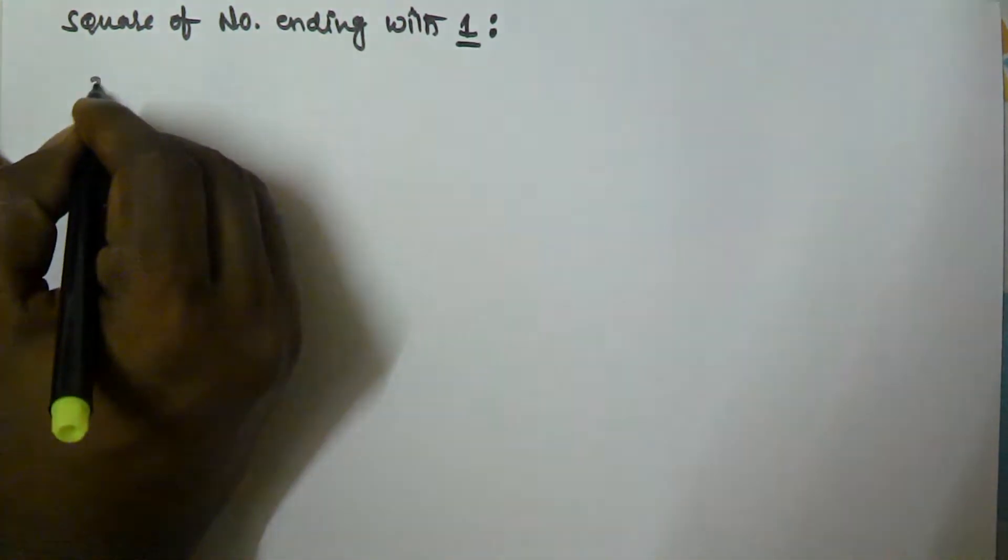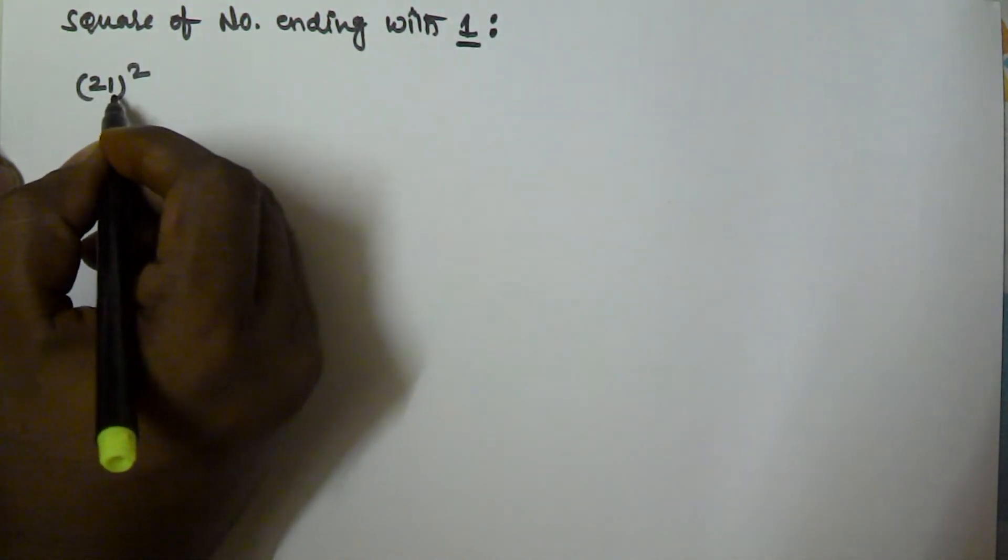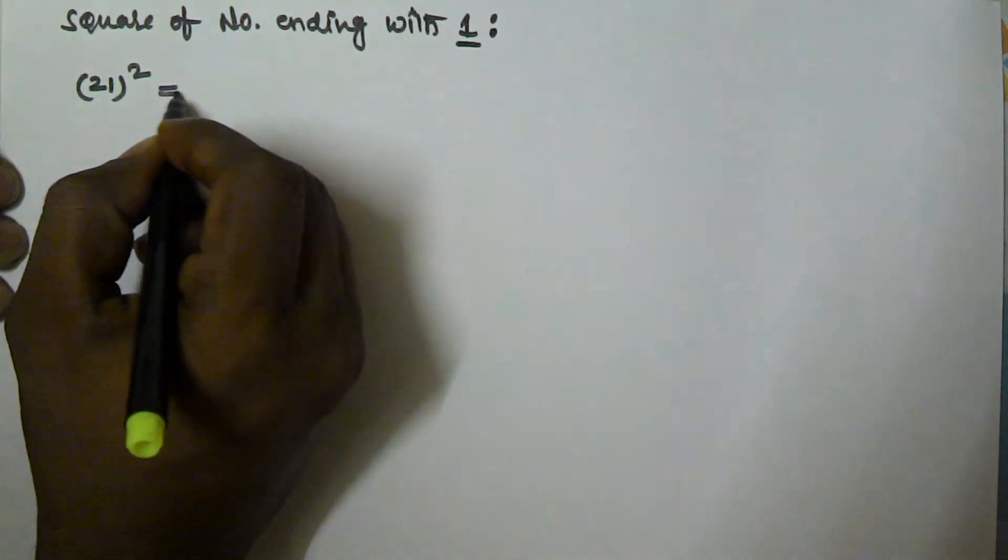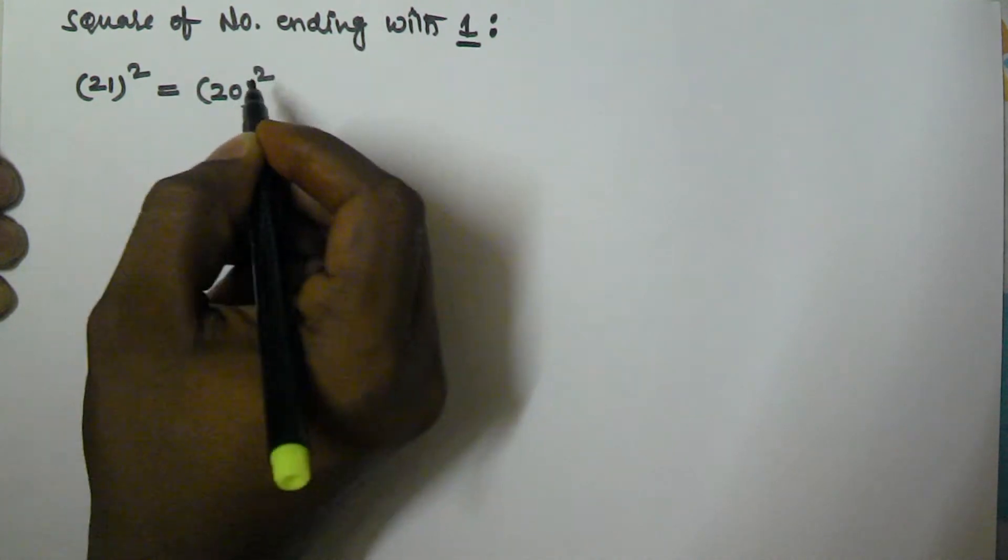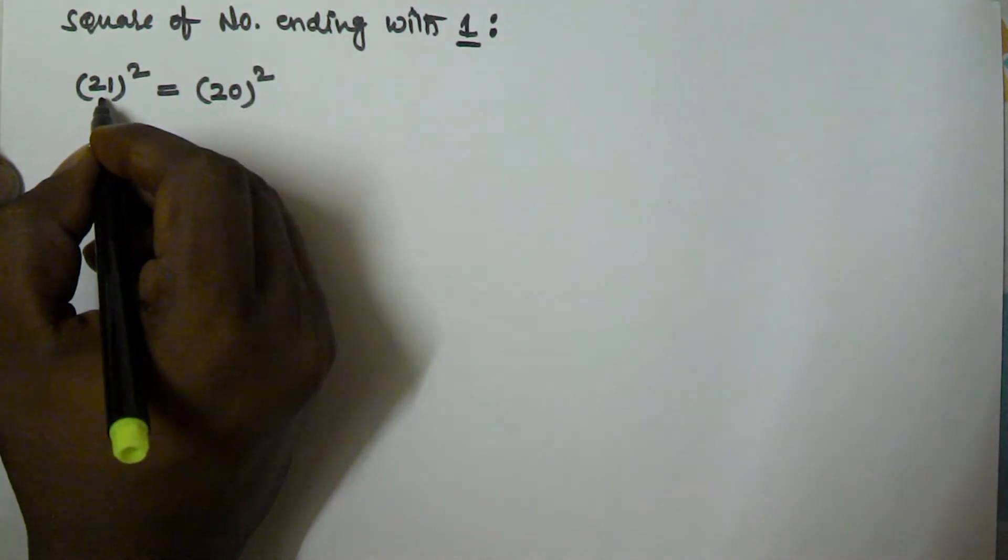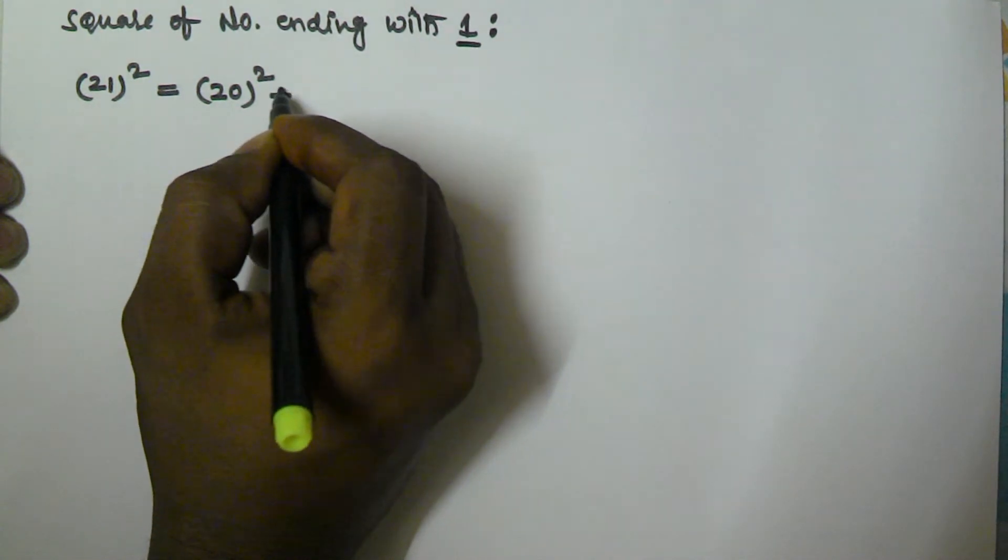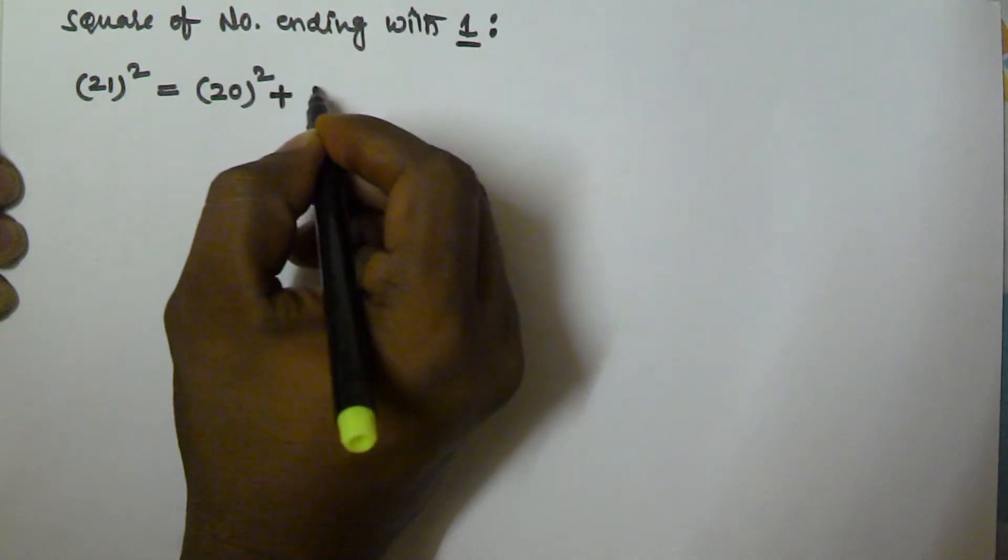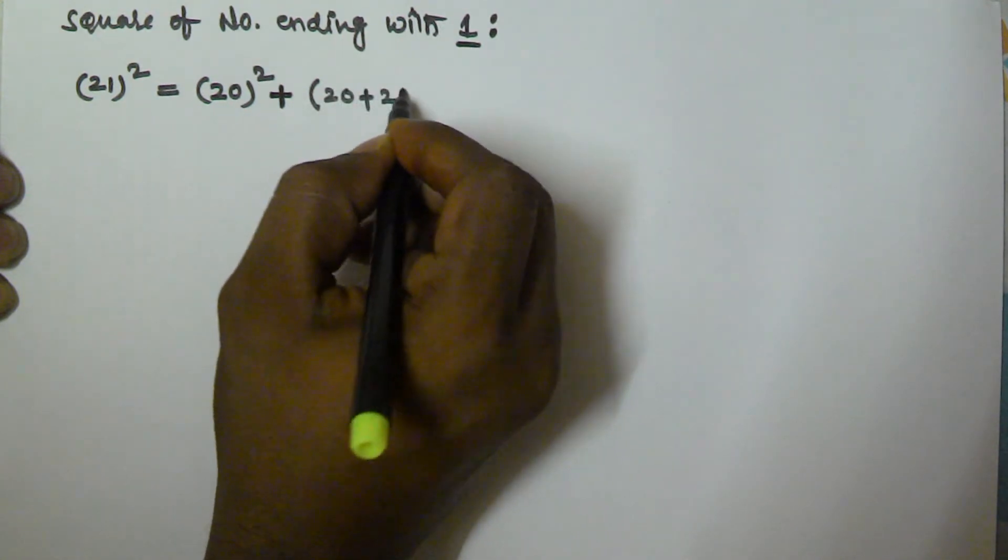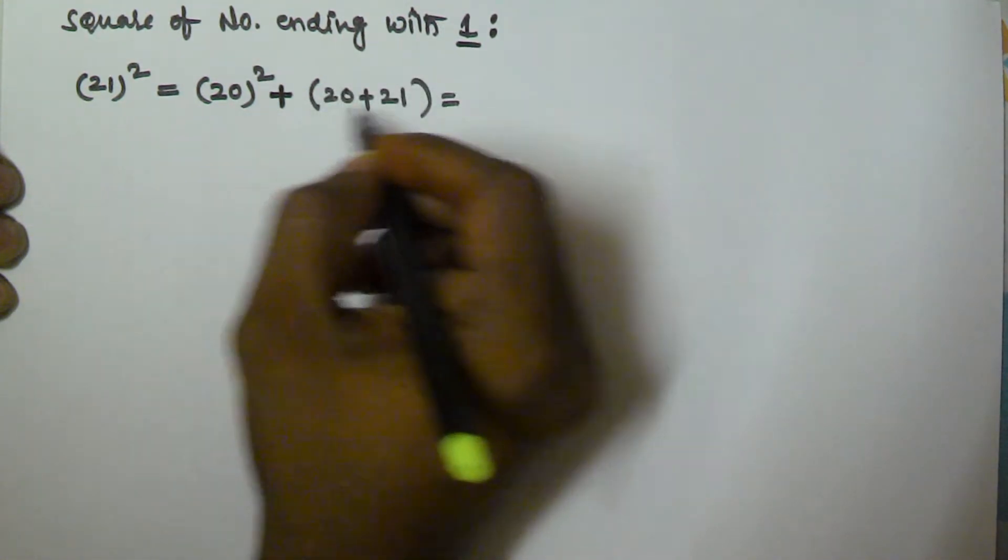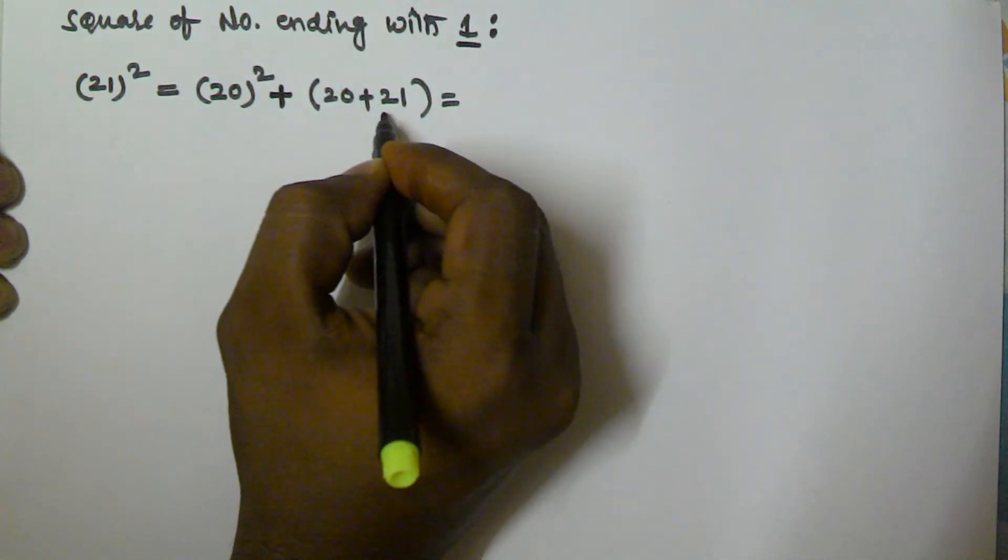So let's take 21 square. This is the number which is ending with 1, equivalent to write 20 square. 21 square is bigger than 20 square, that means we have to add some value, so plus this 20 plus 21. So we know the 20 square is 400, 400 plus 20 plus 21, 441. So the 21 square is 441.